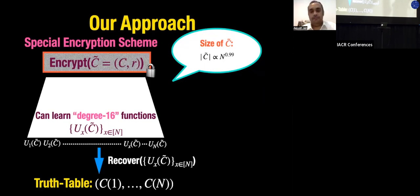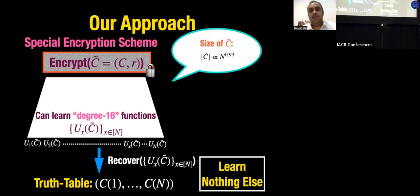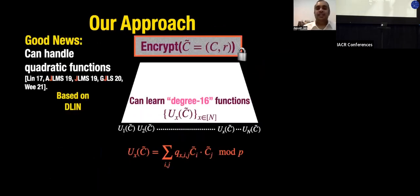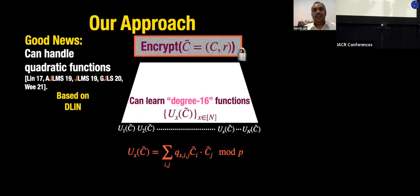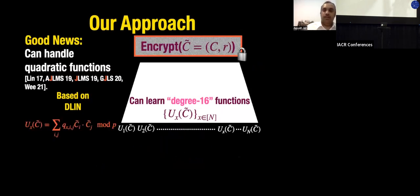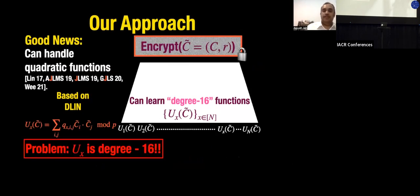What's known for such encryption schemes? If hypothetically these were degree-2 polynomials over some prime field, then quadratic functional encryption — which can be based on DLIN — would give us the result. However, the problem is that these functions are degree 16, not degree 2.